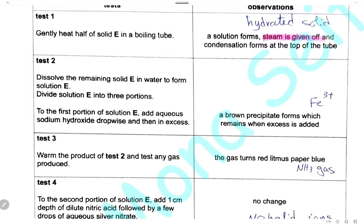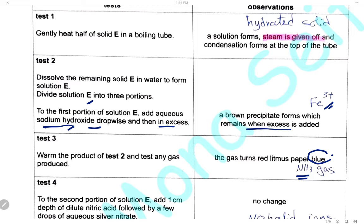In test 2, dissolve solid E in water to form a solution and divide it into three portions. To the first portion, add aqueous sodium hydroxide dropwise and in excess: a brown precipitate forms which remains in excess. A brown precipitate that does not dissolve in excess indicates iron(III) ions — Fe³⁺. In test 3, warm the product of test 2 and test any gas produced: warming with sodium hydroxide produces a gas that turns red litmus paper blue, which is ammonia gas, indicating ammonium ions (NH₄⁺) are present.